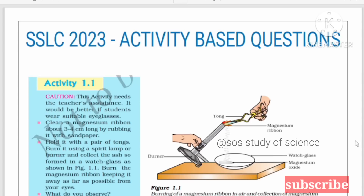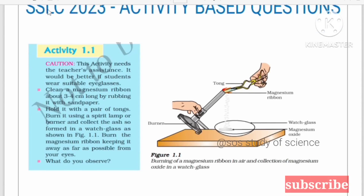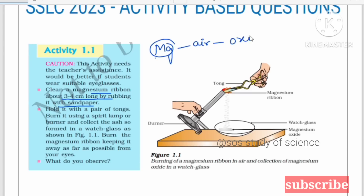The first activity is all about burning a magnesium ribbon. Take a magnesium ribbon about 3 to 4 centimeters long and rub it with sandpaper to clean it. Why do you need to clean the magnesium ribbon? Because when magnesium is exposed to air, it forms an oxide layer over it. So before burning, we need to remove the oxide layer using sandpaper.